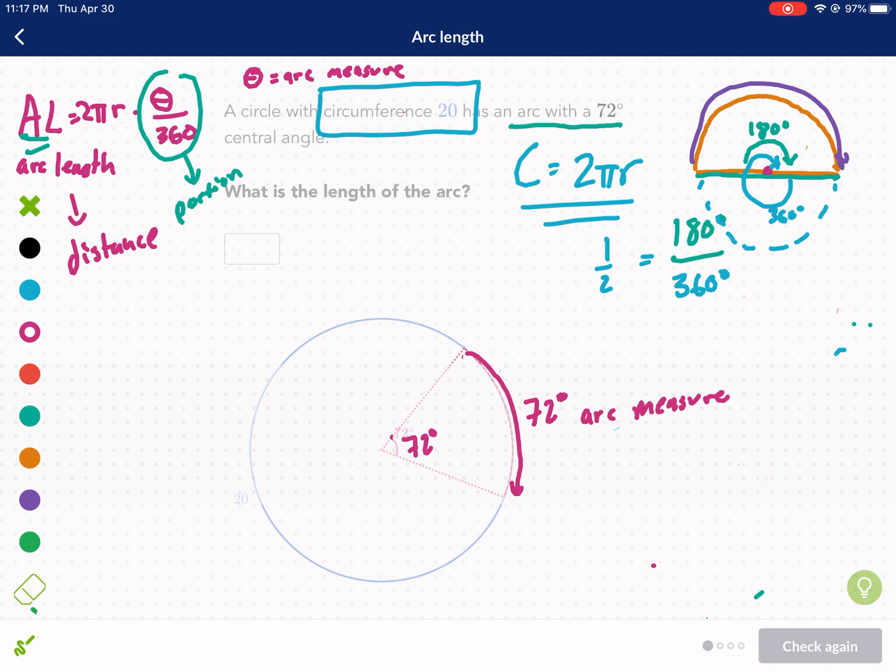Now, in this problem, it already gives us the circumference. Theta divided by 360 times circumference. Big C is their circumference. We already know circumference is 20. So I'm going to write 20 here for circumference. We know our arc measure is 72, and we're going to divide that by 360.